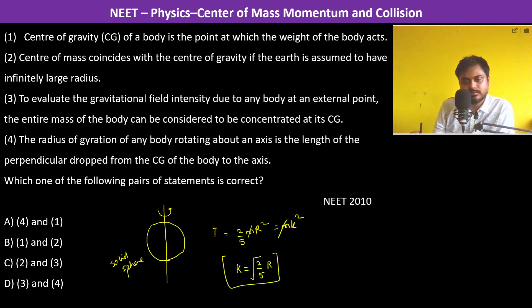So k is the radius of gyration, which is √(2/5) × r. If we drop from the center of gravity perpendicular to the axis, the length is actually 0. Therefore, the fourth will not be the answer.